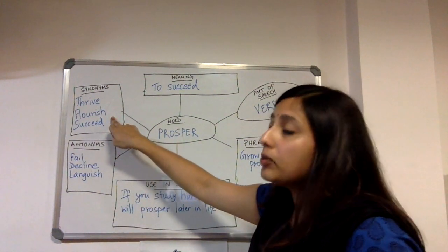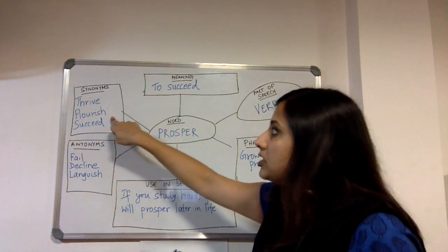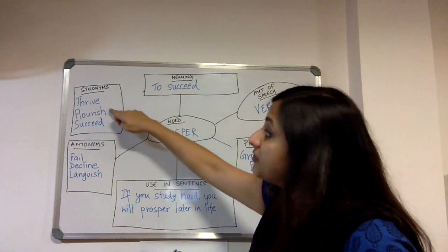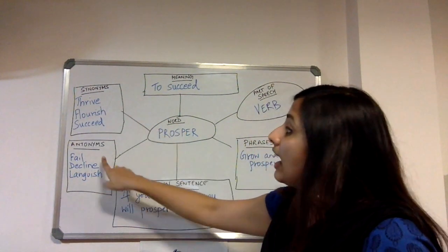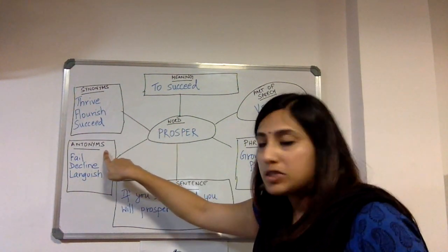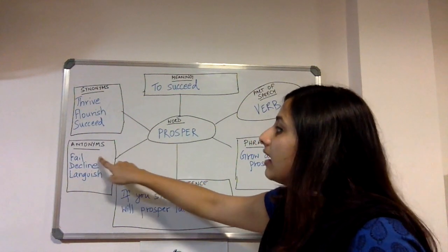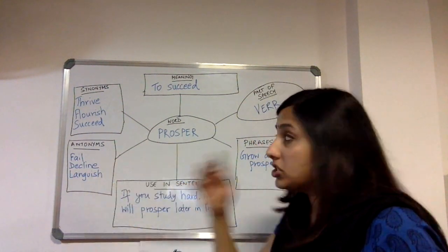What are the synonyms of prosper? What are the words that are similar to prosper? Thrive, flourish, succeed. And what are the antonyms or the opposites of prosper? Some antonyms are fail, decline and languish.